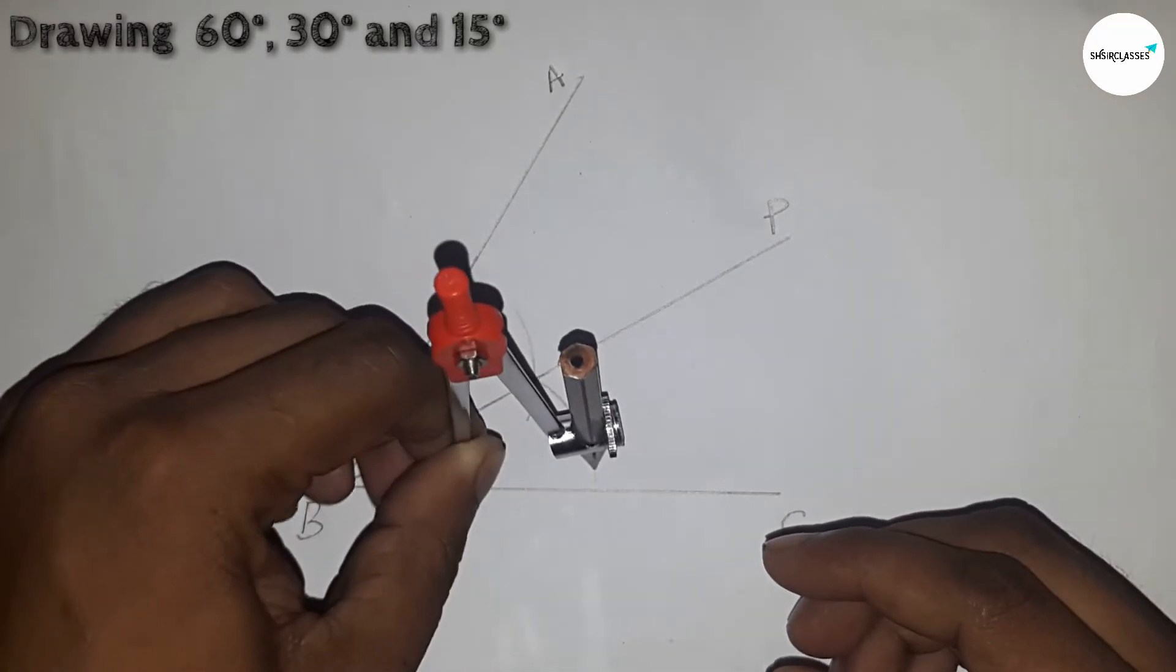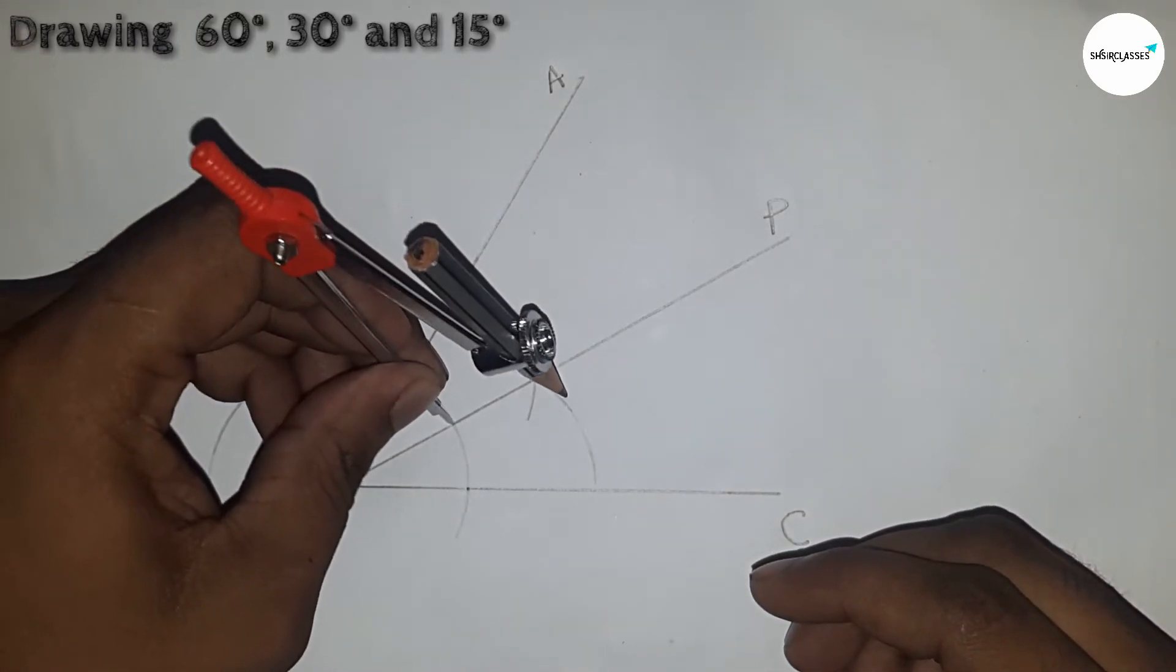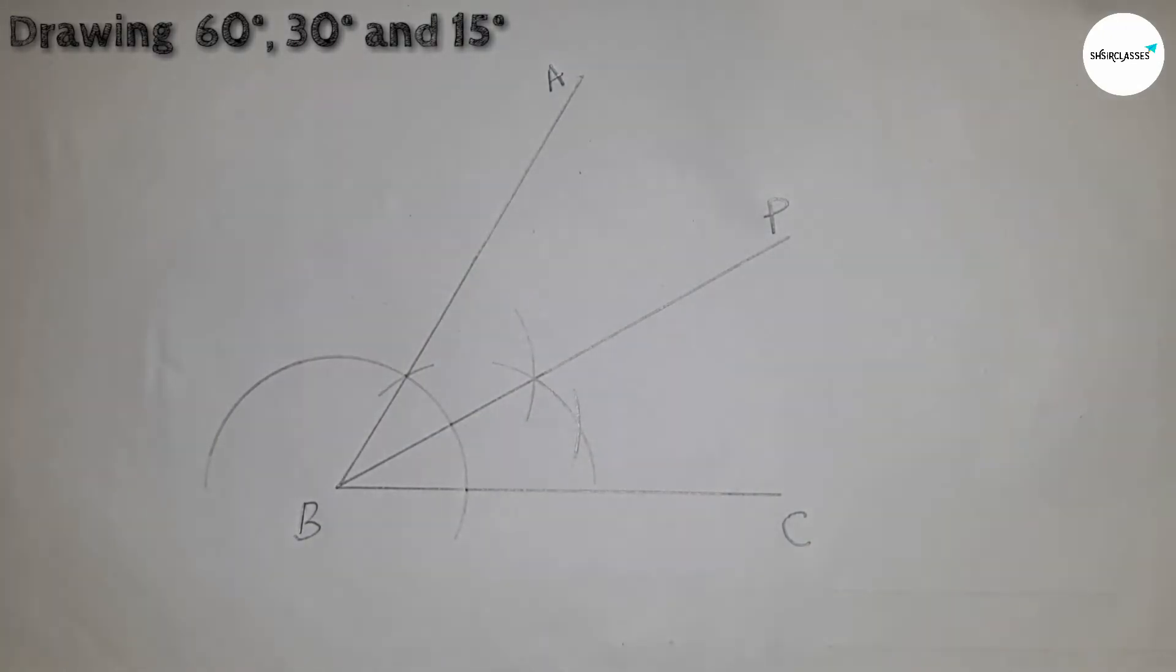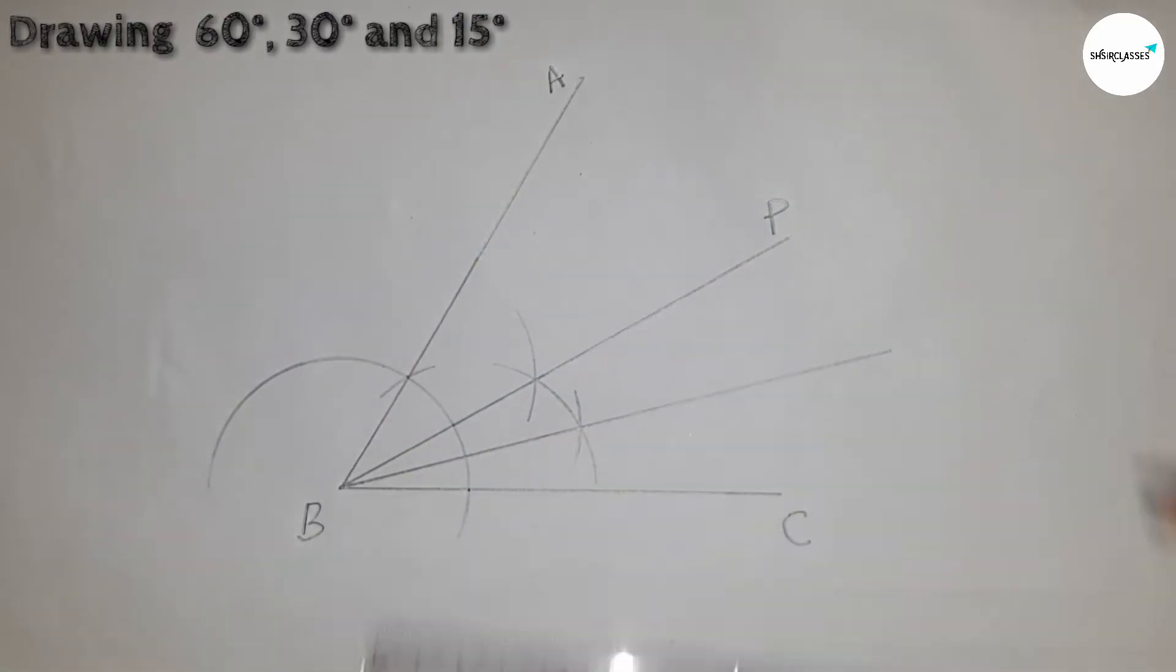Again with same radius and putting here and drawing arc. And with same putting here and cut the arc by this way. Now joining these two points.